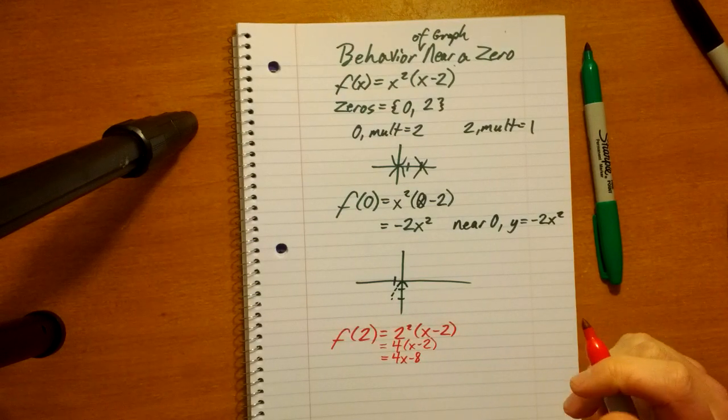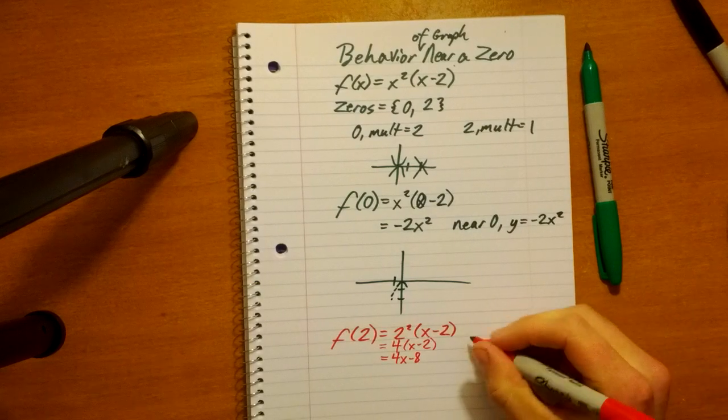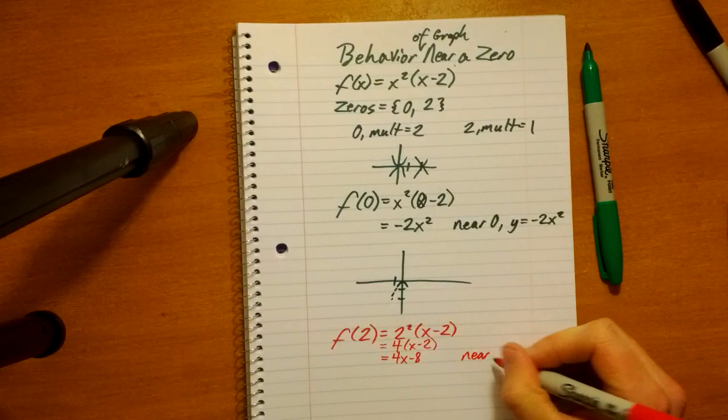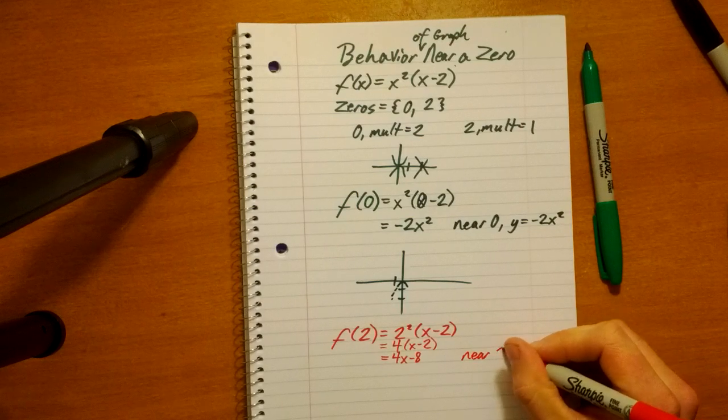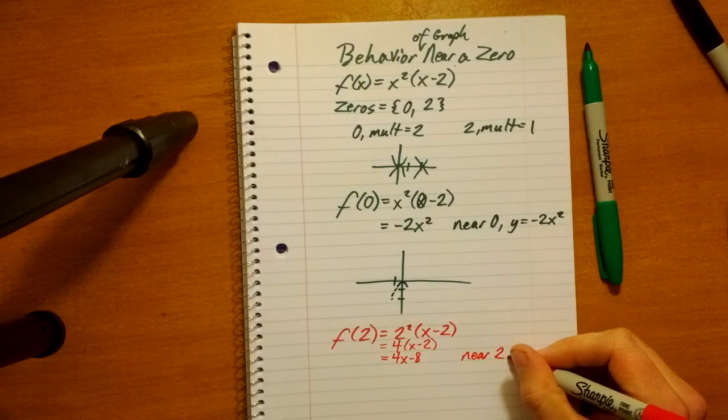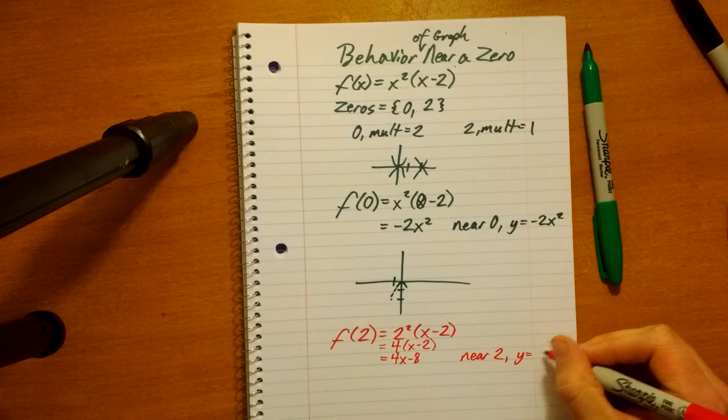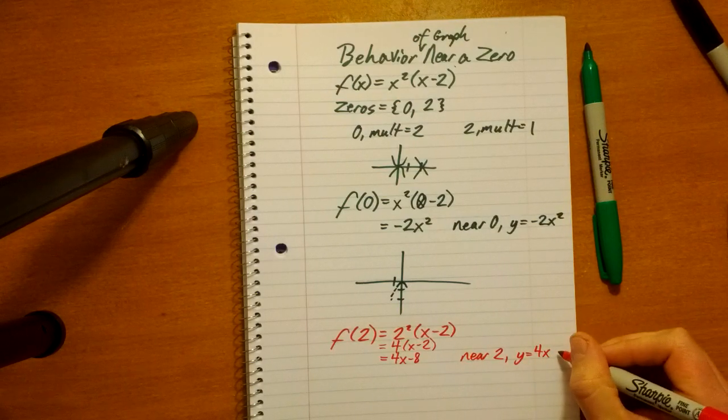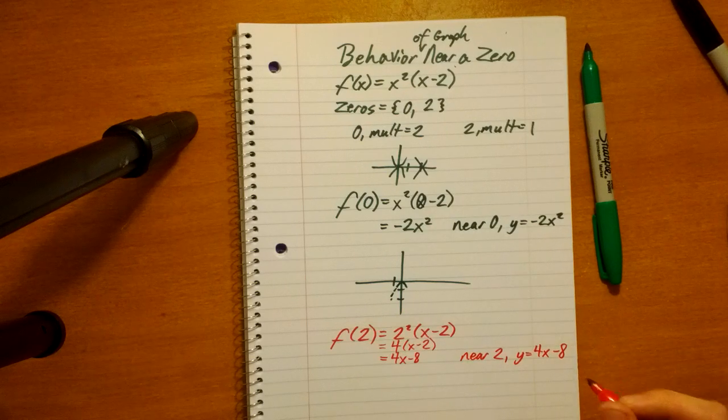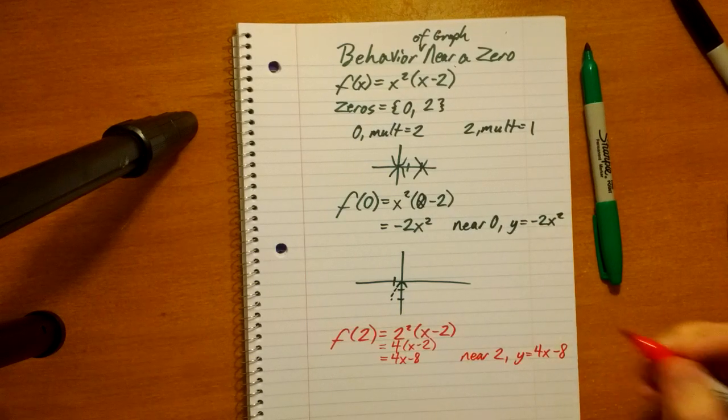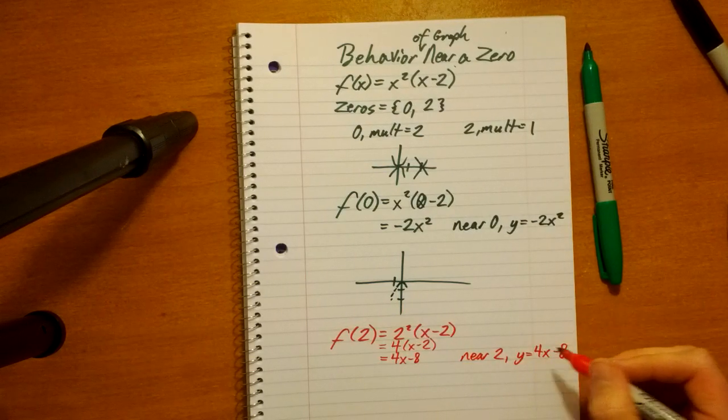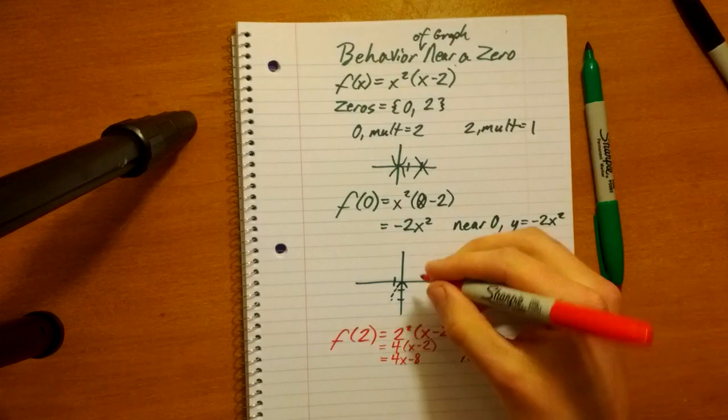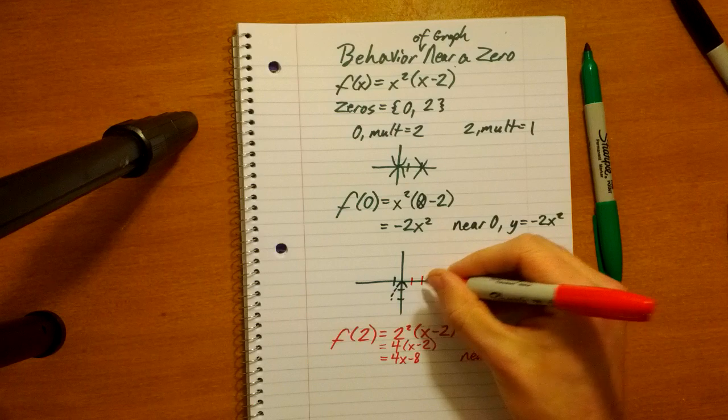So, what this tells us is near two, near the zero of two, the graph behaves like y equals 4x minus 8. And we know that because it's not negative, it's positive, it's going to go upwards. So, we go one, two. And it's going to go up. With a slope of four.